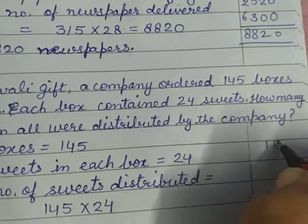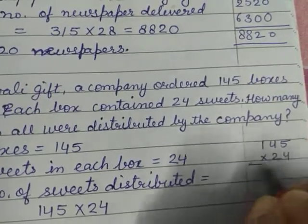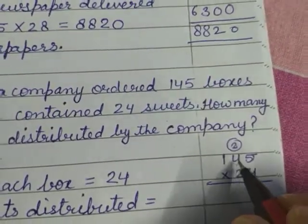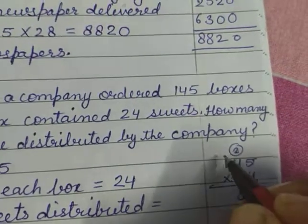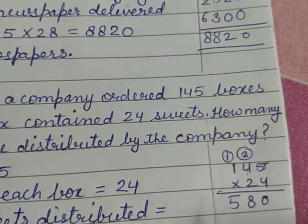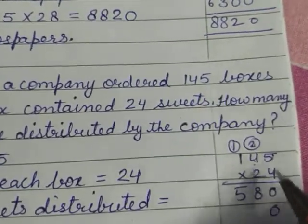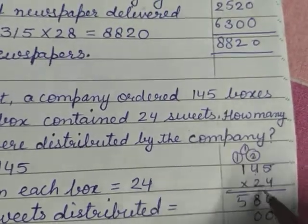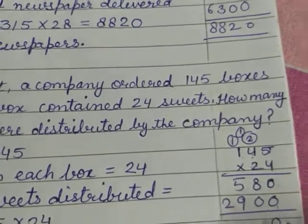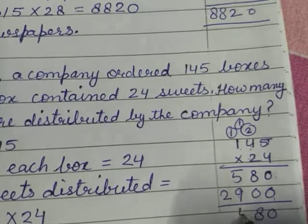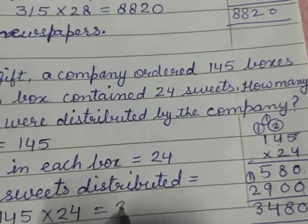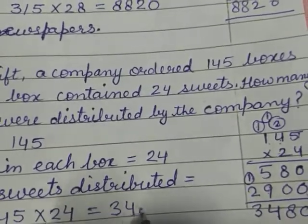145 × 24 की calculation: 4 × 5 = 20, 0 लिखो carry 2. 4 × 4 = 16, 16 + 2 = 18, 8 लिखो carry 1. 4 × 1 = 4 and 1 = 5. Tens की place पर 0. 2 × 5 = 10, 0 लिखो carry 1. 2 × 4 = 8 and 1 = 9. 2 × 1 = 2. Final addition: 580 + 2900 = 3,480.